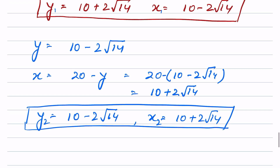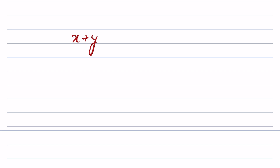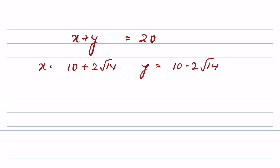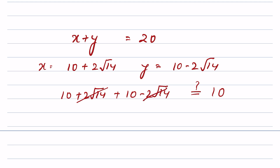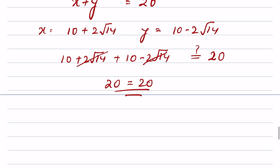Let's verify. When x equals 10 plus 2 root 14 and y equals 10 minus 2 root 14, then x plus y equals (10 plus 2 root 14) plus (10 minus 2 root 14). The 2 root 14 terms cancel, giving 10 plus 10 equals 20. So LHS equals RHS — confirmed.